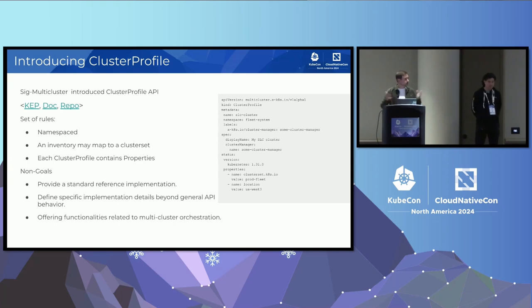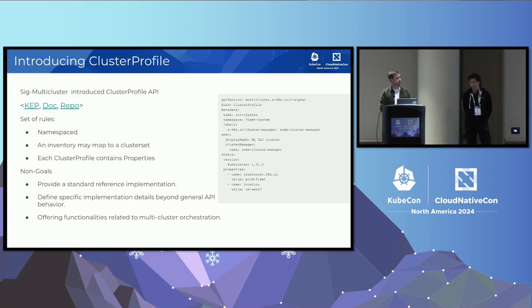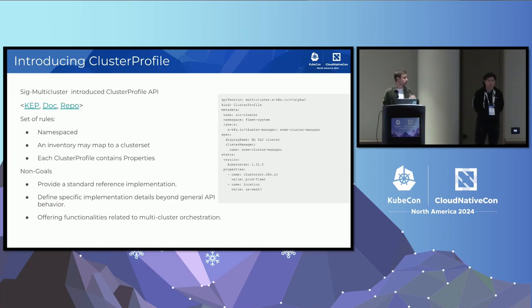Properties are probably the most interesting field and we'll get back to that. We kept it namespaced — that was important, making it easier to test, keep constrained, and manage permissions. We also mapped it to ClusterSet, which is another SIG Multi-Cluster concept. What we didn't want to do is deal with implementation — this is just an API, a CRD definition. We're not writing cluster managers or consumers. We want the community to provide implementations. The second non-goal: we didn't want to dig into provisioning. This API reflects the cluster — it's a pointer to a cluster, not the cluster itself.